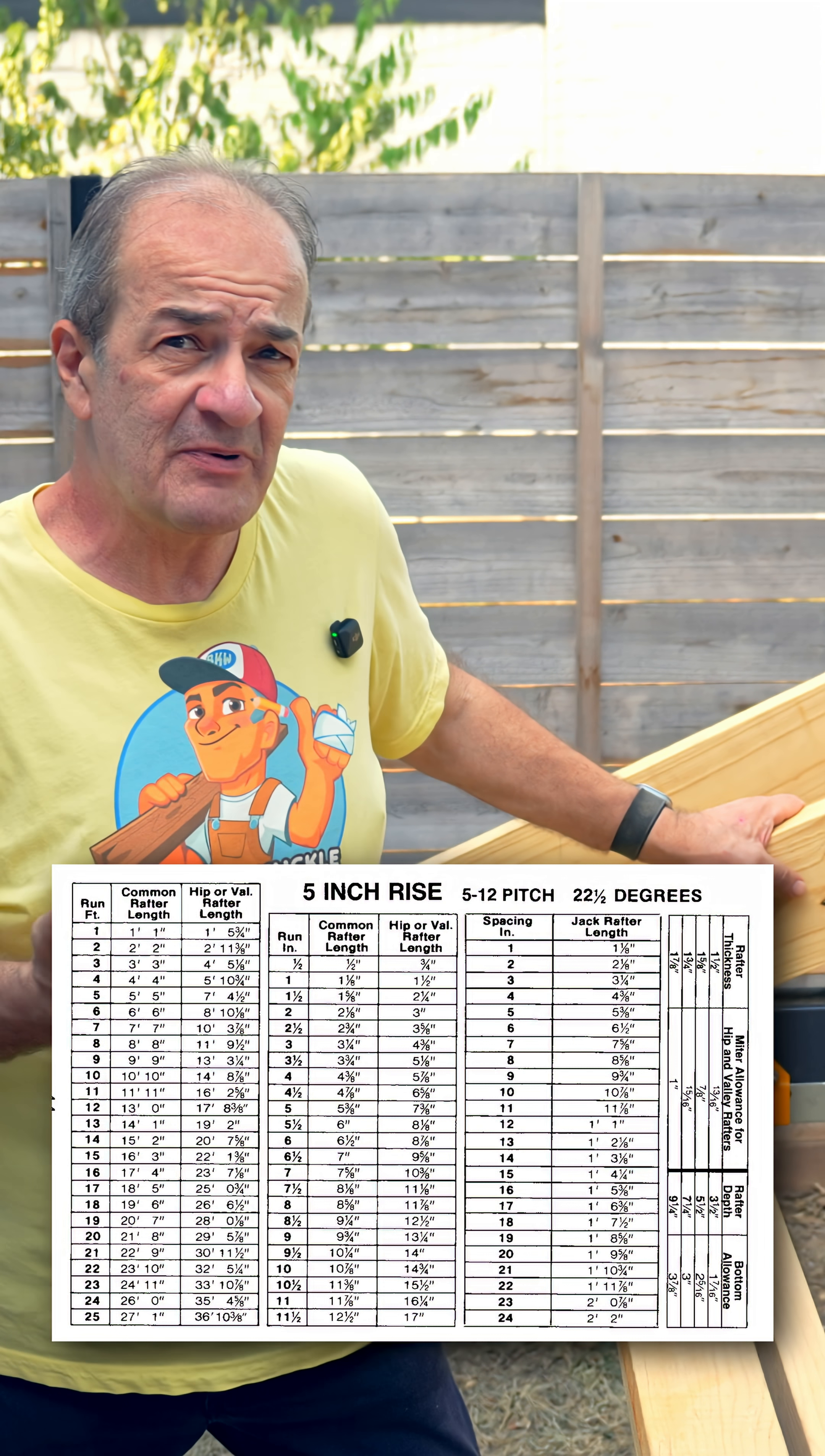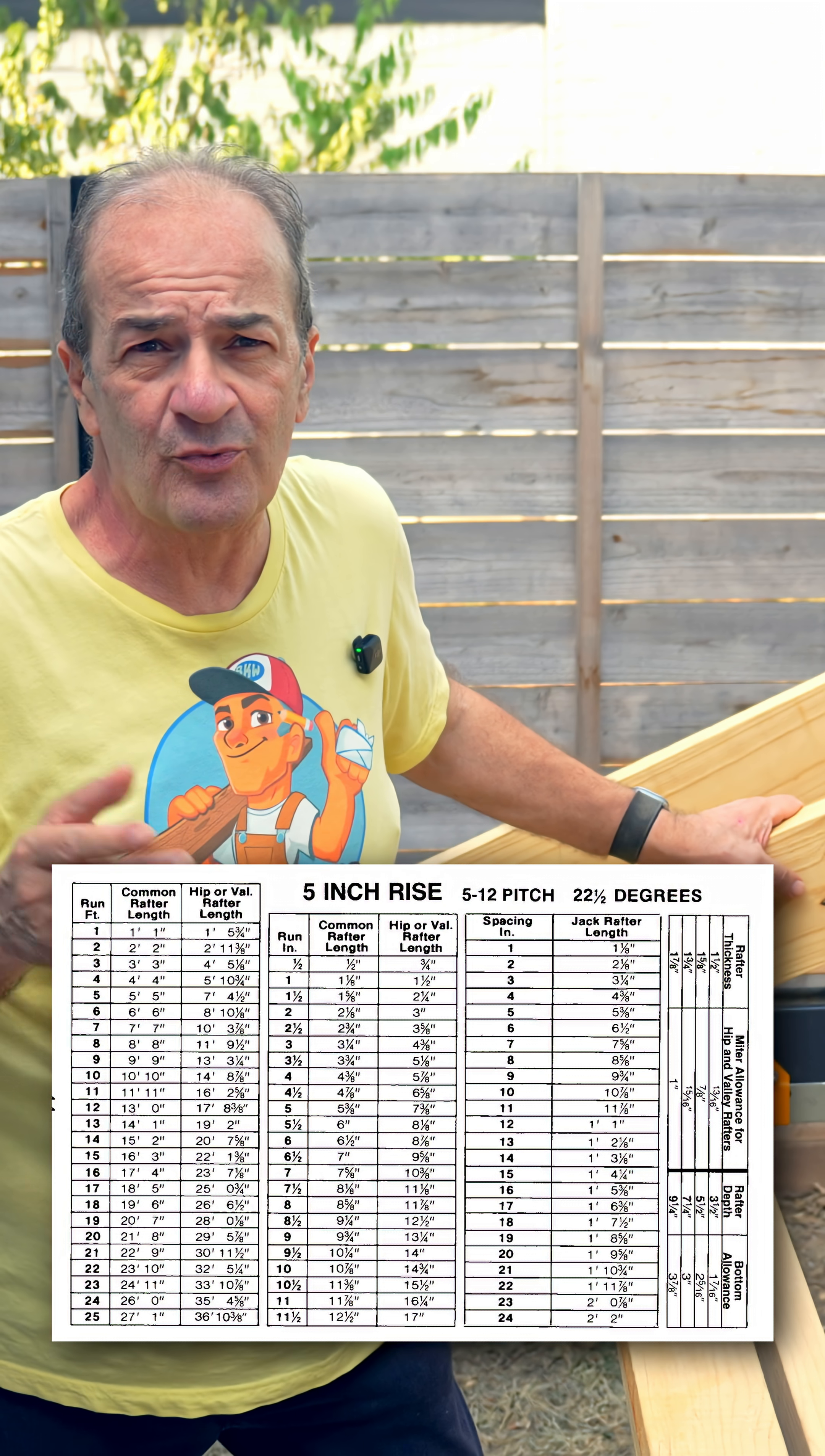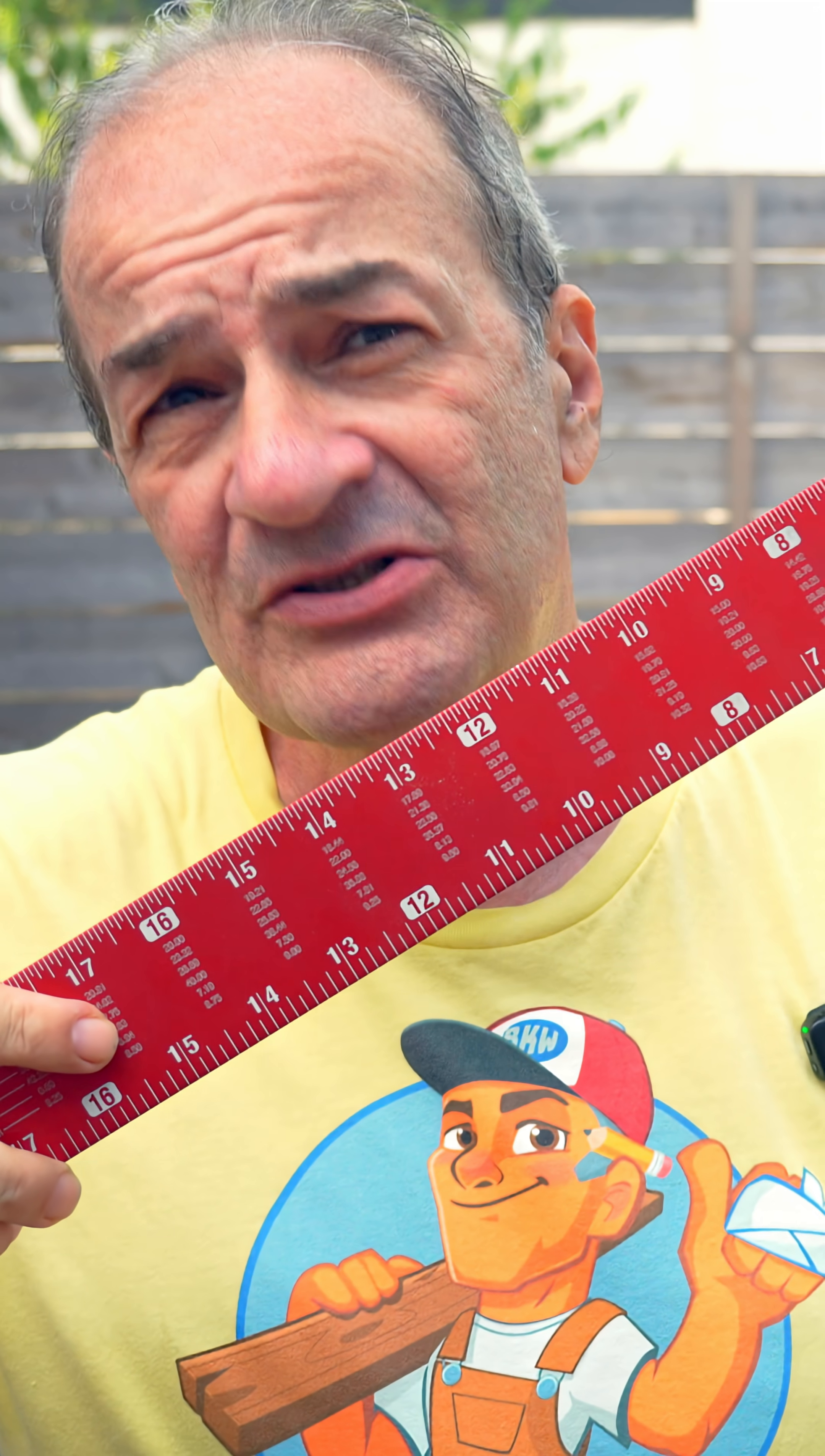There are tables that come with some speed squares or that you can find online that will give you this figure based on the rise and run of your particular structure. And if you don't have a table, you can also find this information on most framing squares.